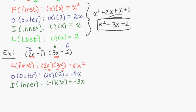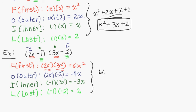And finally we have last: negative 1 times negative 2. Negative 1 times negative 2 is positive 2, because the two negatives being multiplied become positive. Adding up all these terms together, it's 6x squared minus 4x minus 3x plus 2. The negative 4x minus 3x combine to become negative 7x, because I just added the two coefficients — negative 4 minus 3 is negative 7.